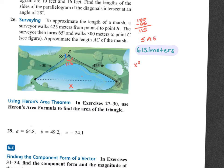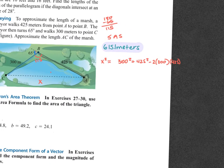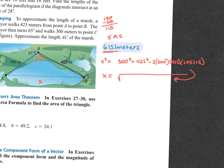So it would be X squared equals the other two sides: 300 squared plus 425 squared, minus 2 times 300 times 425 times the cosine of 115. Then don't forget to square root whatever you get from that, and that's going to give you 615.1 meters.